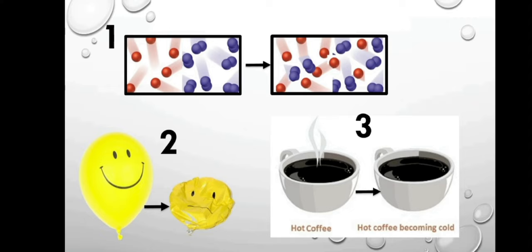Consider a few examples: Number one, two gases mixing together. Number two, air being leaked from a balloon. Number three, hot coffee losing its heat. In example one, the two molecules moved to a state where they mixed together, and that state happened spontaneously — without any external aid. But what about the opposite process? Can you reverse it from the mixed state back to the separated state without external aid? From our experience, we know that this will not happen. So it is safe to say that the reverse process is not spontaneous.